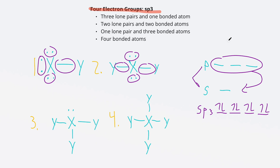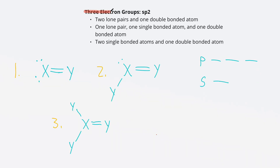Hybridization is a way to take our electron configuration and make it fit with observations about atoms that have four electron groups. The equal energy of those groups is an observation, and hybridization explains it while staying consistent with electron configuration. Now we'll look at when the central atom has three electron groups — that's sp2 hybridized. The three images correspond to three bullet points showing different ways to have three electron groups, and a double-bonded atom still counts as just one electron group.